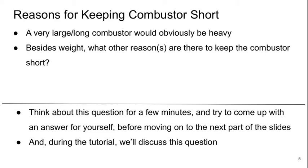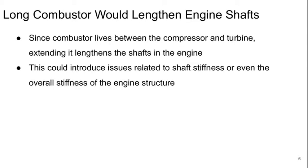Welcome to Part 2 of Lecture 18 of Aerospace Propulsion. We left off with this question of why, besides weight, we want to keep a combustor short. The answer is that a long combustor would lengthen the engine shafts. The combustor lives between the compressors and turbines. Making it longer extends the length of the shafts, which could introduce issues related to shaft stiffness or even the overall structural stiffness of the engine. So there's a real push to make combustors short.